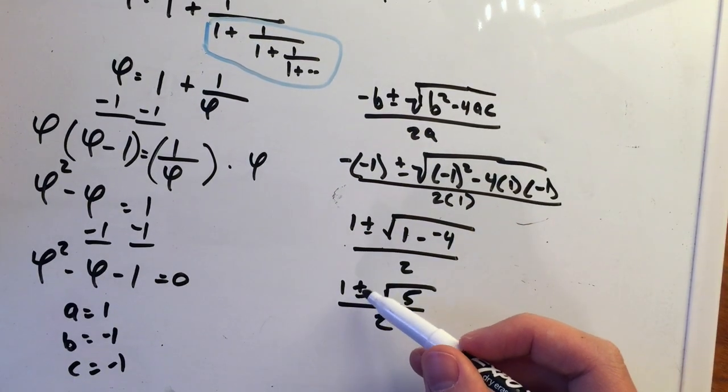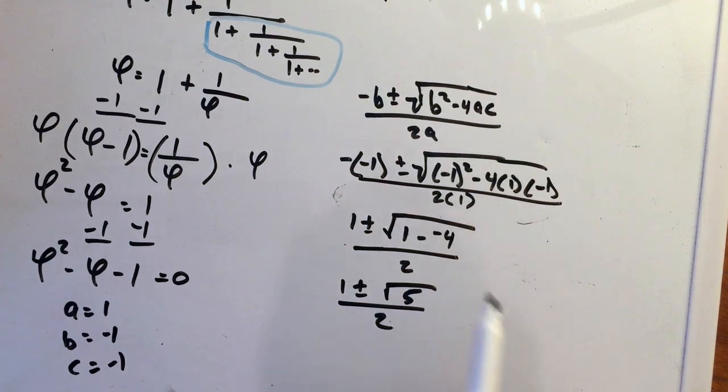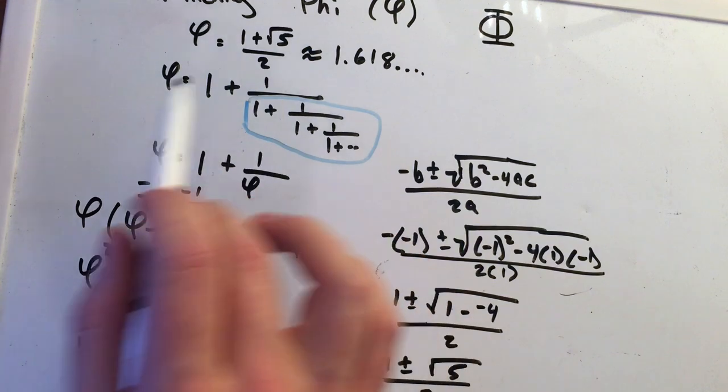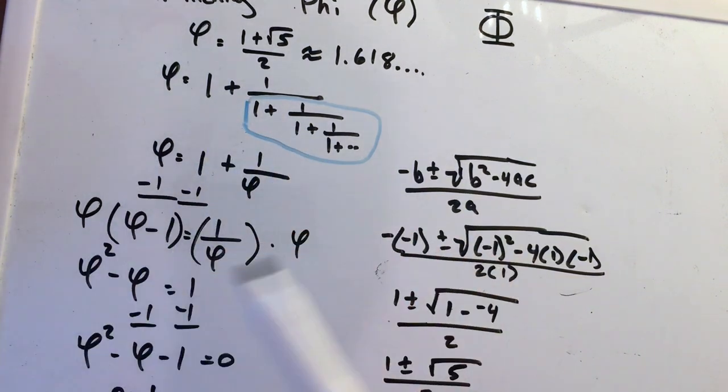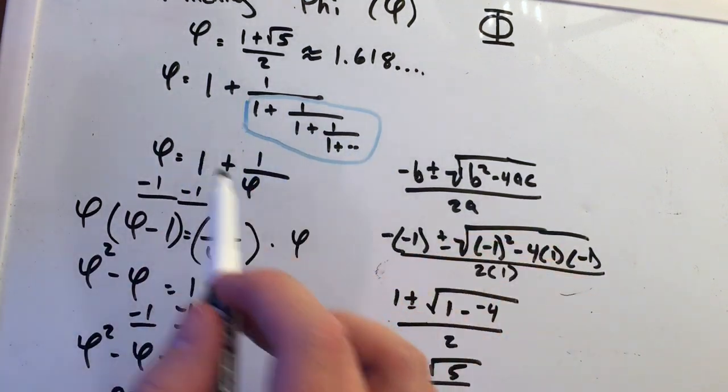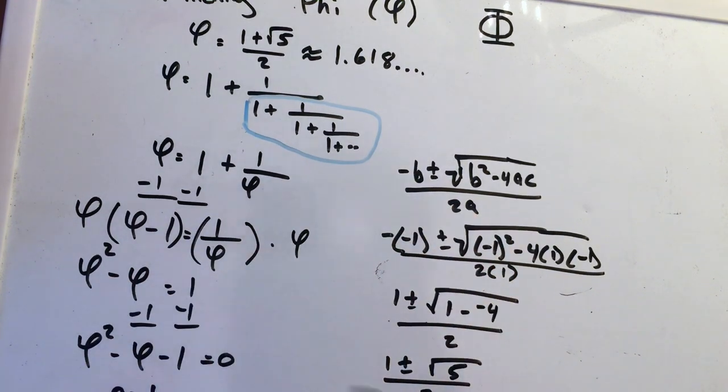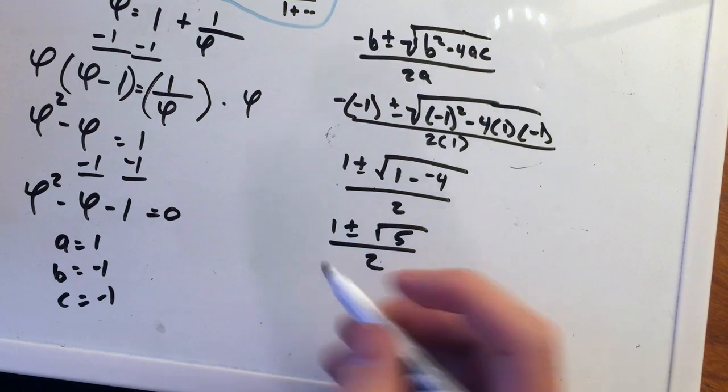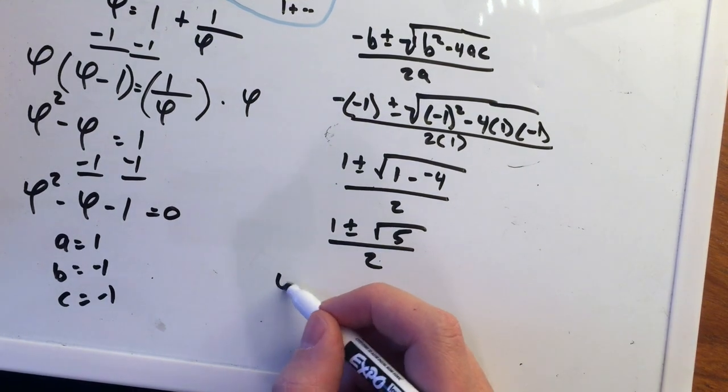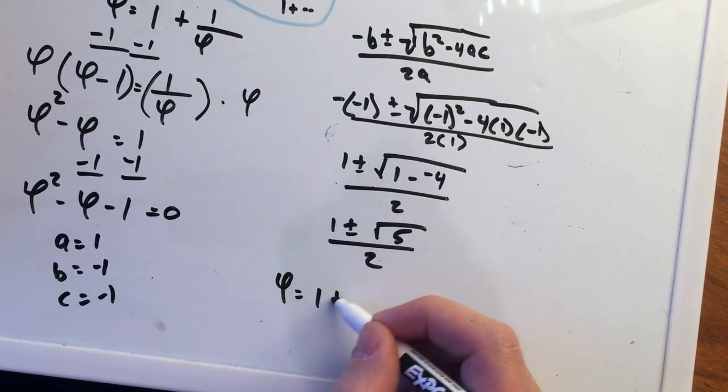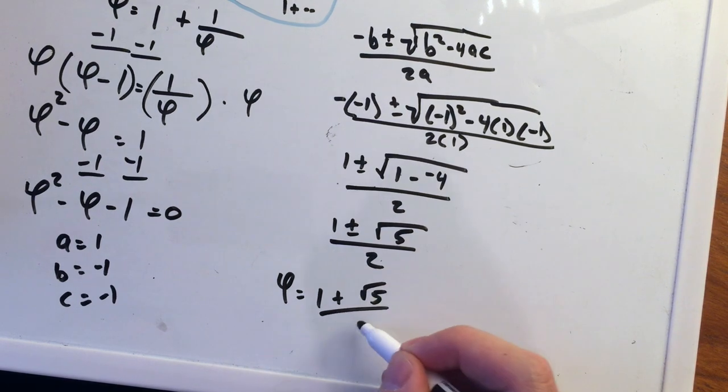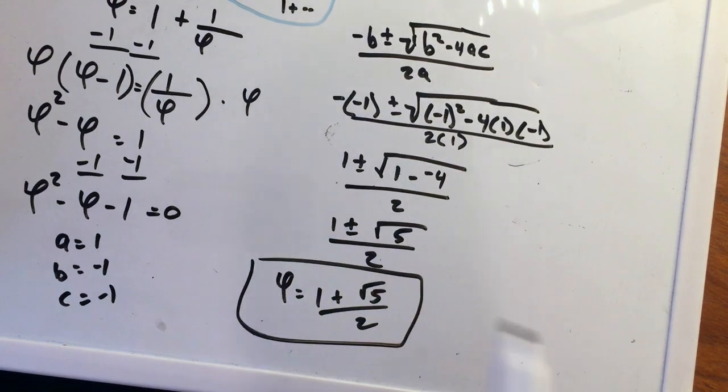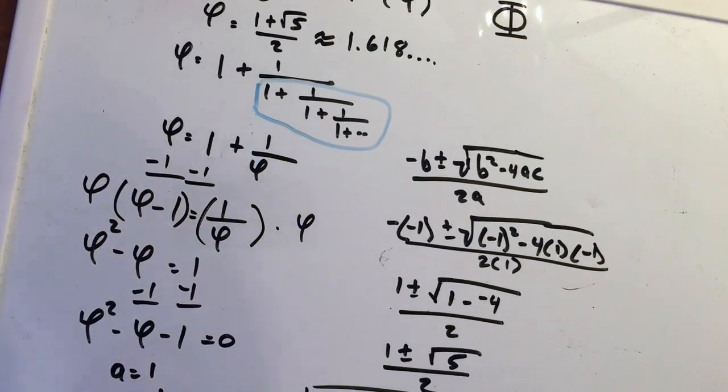But we have 1 plus or minus. And we notice back in our original formula, this will always be a positive answer. There's no way this can be negative. Positive plus a positive plus a positive. We're always only adding positive numbers. We can only have a positive answer. So therefore, our phi, our value for phi is just 1 plus the square root of 5 over 2, which we talked about in the beginning. So here is how you can get phi from that continued fraction, a way to get phi.